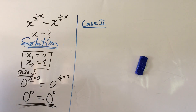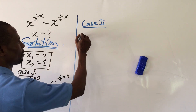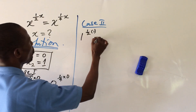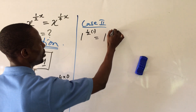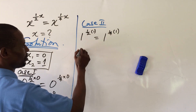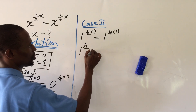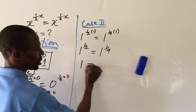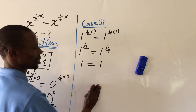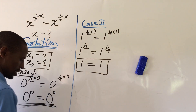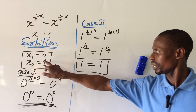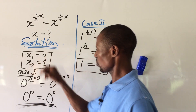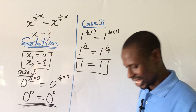Case two: substituting x=1, we have one to the power of one all over two times one, equal to one to the power of one all over four times one. Simplifying, this is one to the power of one all over two, equal to one to the power of one all over four. One to the power of any value equals one, so both sides equal one. This confirms that x=1 also satisfies our equation. Therefore both solutions x₁=0 and x₂=1 satisfy the exponential equation.